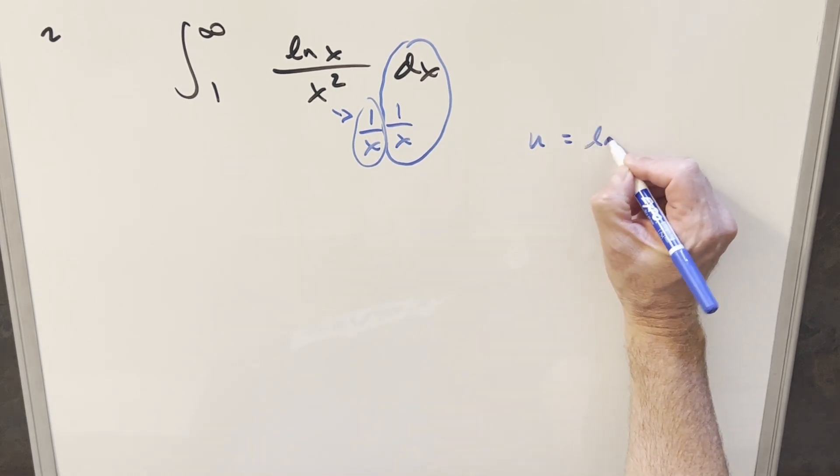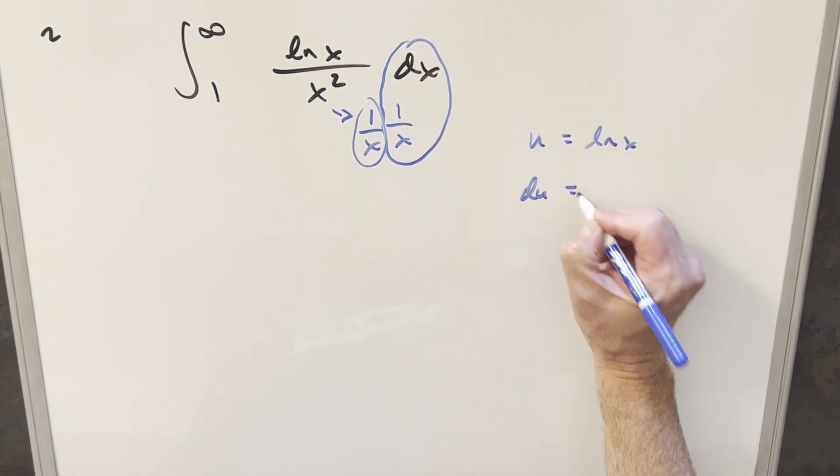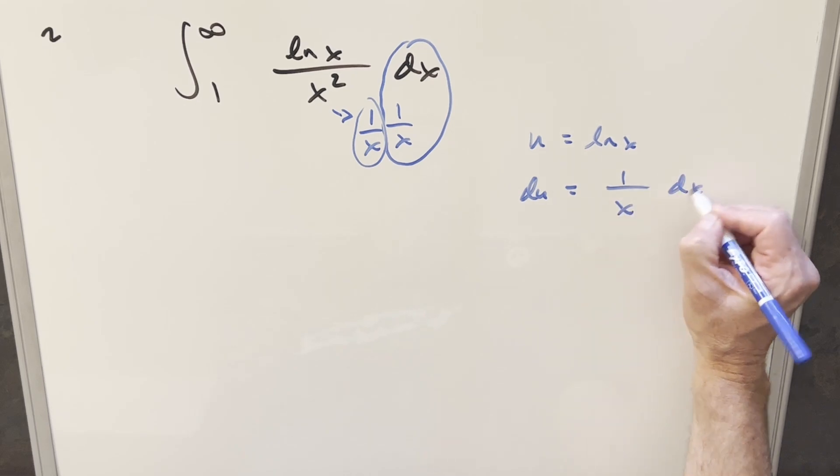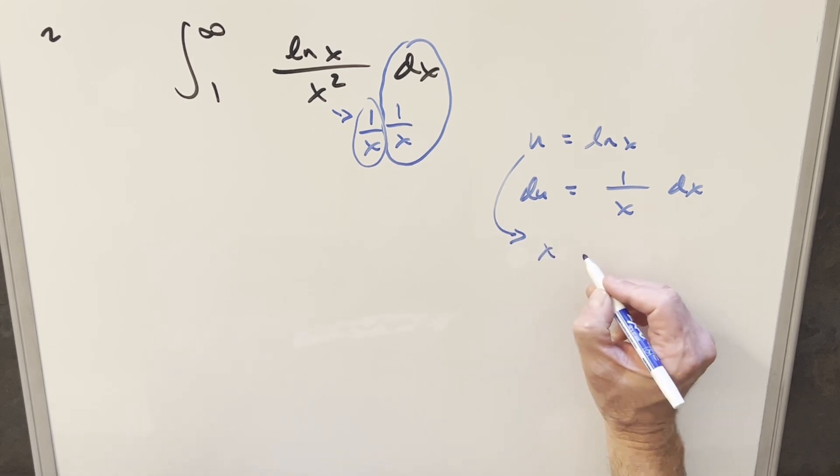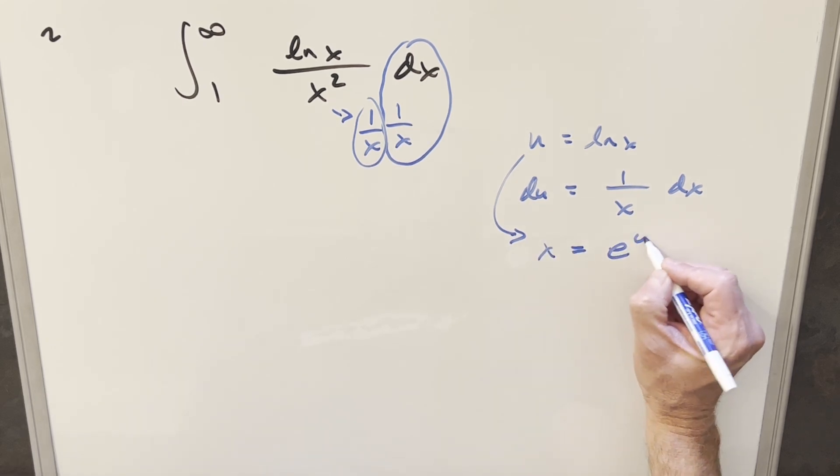So let's do a u substitution for natural log x. Then our du value is just 1 over x dx. And to get a value for x, let's use this top one. Rearranging with log properties, we get x is e to the u.